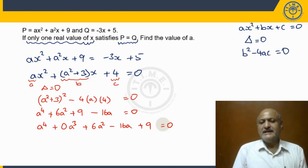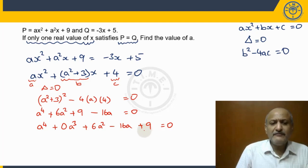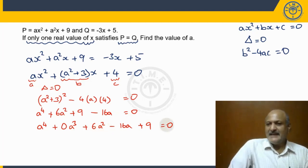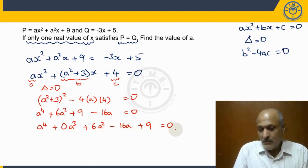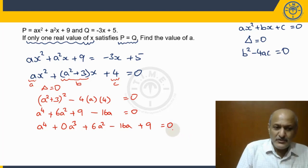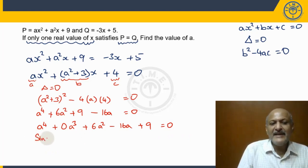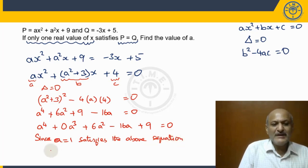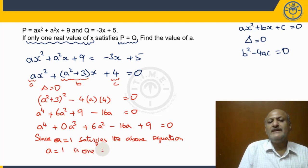Now, if we observe carefully and try a = 1: we get 1 + 0 + 6 + 9 - 16 = 16 - 16 = 0. It satisfies the equation. Hence we can confirm that 1 is one of the roots of this 4th degree expression. Since a = 1 satisfies the above equation, a = 1 is one root of the given equation.